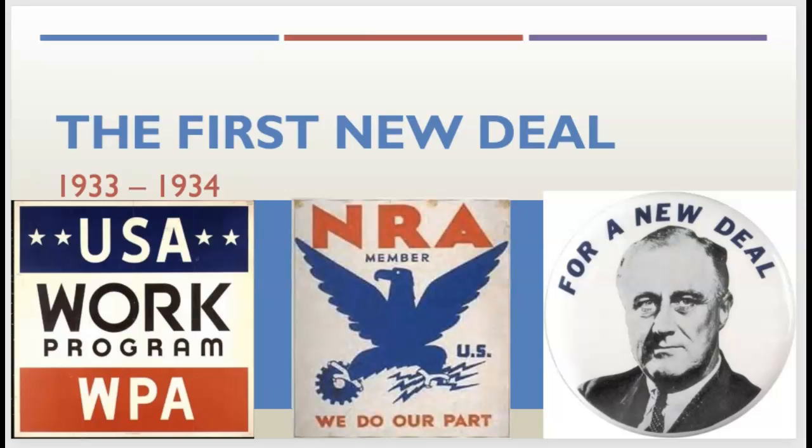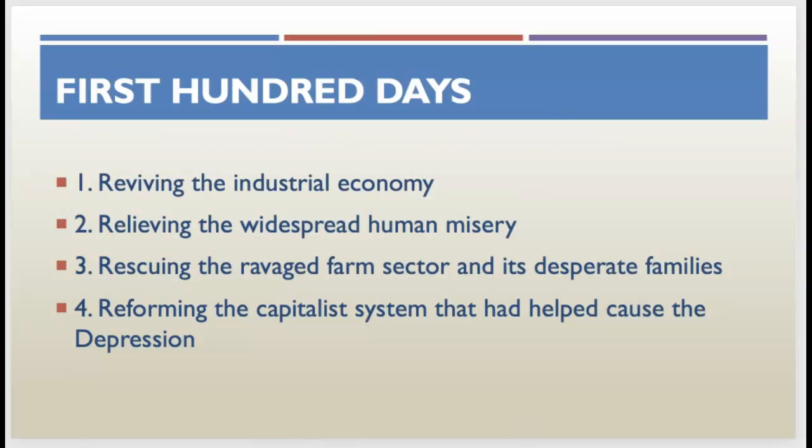During FDR's first hundred days, he has several things he wants to focus on. First, he wants to revive the industrial economy. Second, he wants to relieve the widespread human misery. Third, he wants to rescue the ravaged farm sector and desperate families — farmers have always struggled throughout American history, but especially during the Depression as loans were being called in. He also wanted to reform the capitalist system that he thought helped cause the Depression.